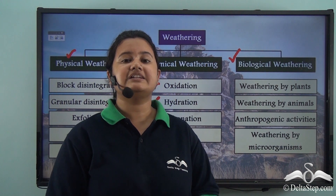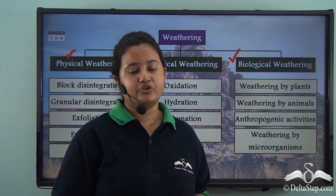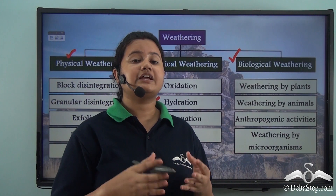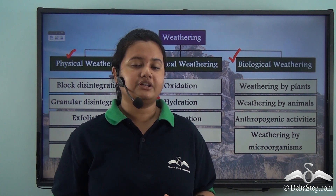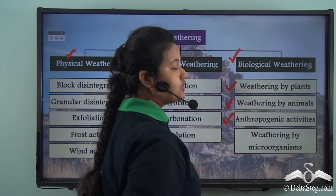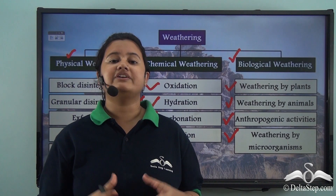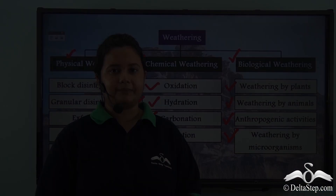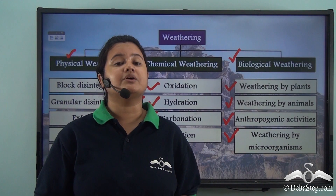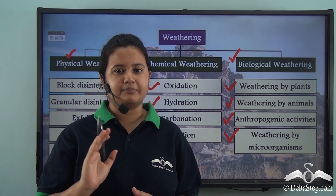In today's video we discussed in detail about biological weathering. Biological weathering refers to the disintegration of rocks caused due to the action of living beings. It is further classified based on the agent that causes it: weathering by plants, weathering by animals, anthropogenic or human activities, and weathering by microorganisms. We first learned how biological weathering is caused by different agents, understood its meaning, and learned that biological weathering is a combination of both physical and chemical weathering.